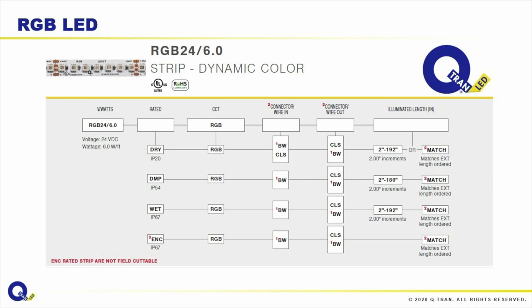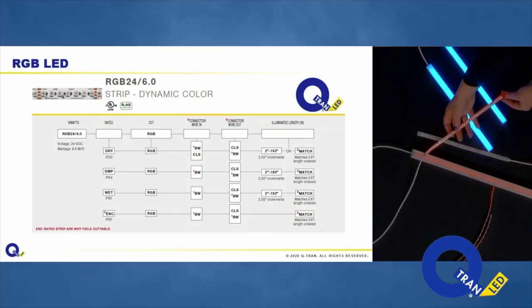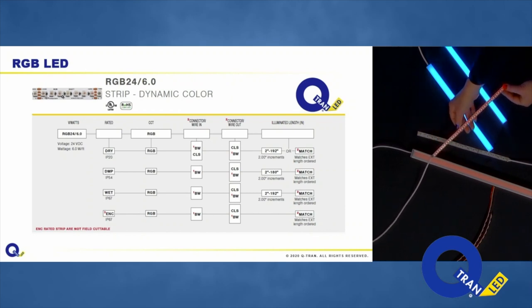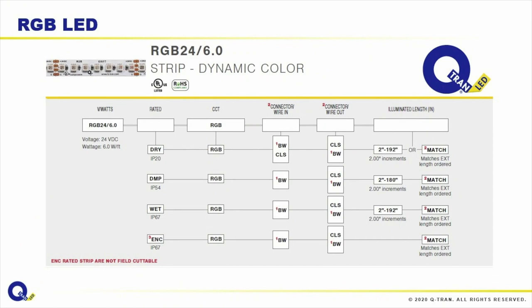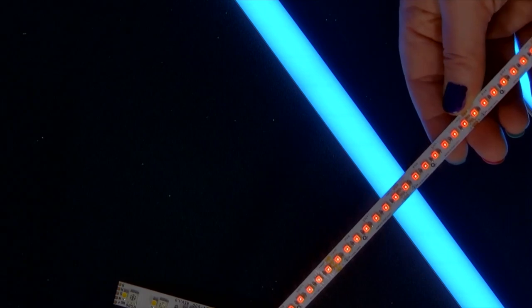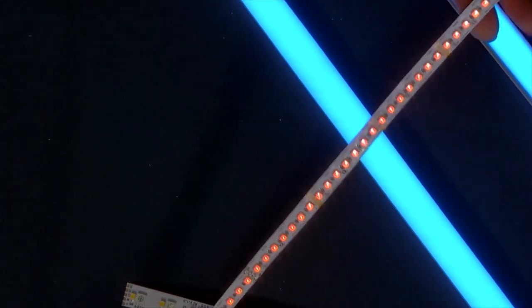Our RGB LED has recently been improved. The first page of the ordering guide shows your series — RGB 24, 24 volts, 6.0 watts — then dry, damp, wet, or encapsulated ratings. CCT is not a CCT; it's an RGB. What we're really excited about is how shallow and closely-spaced the diodes are now. We have a shallower chip — it's a 2-inch cut point — and this makes a big difference for encapsulation.